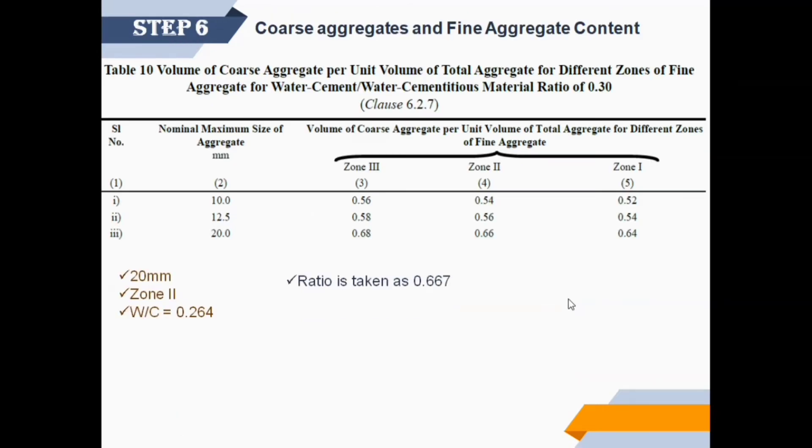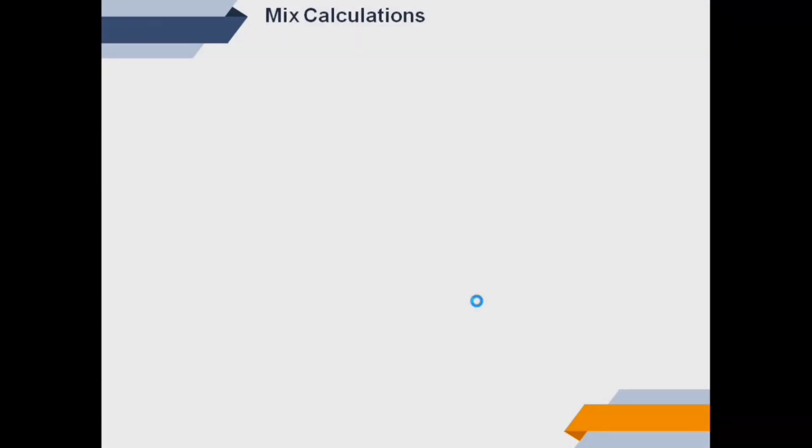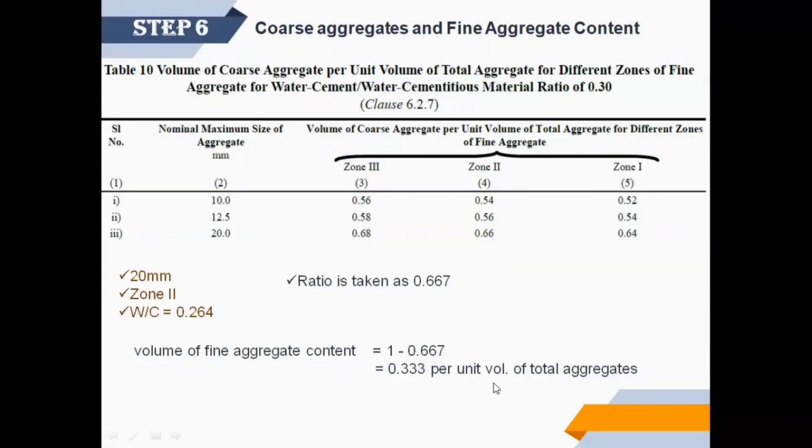Step 6: Coarse aggregates and fine aggregate content. For 20 mm aggregates from zone 2 and water-cement ratio 0.264, from Table 10, volume of coarse aggregates per unit volume of total aggregate ratio is 0.667. After subtracting the obtained ratio from 1, we get volume of fine aggregate content as 0.333 per unit volume of total aggregates.